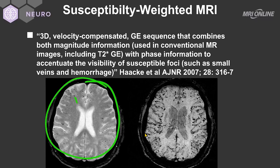On the left side we have a gradient echo scan showing many small black dots of hemorrhage — in this case hemosiderin, because there is no edema around them. On the exact same slice using susceptibility weighted imaging, we see so many more foci of hemosiderin. Although gradient echo technique used to be our best tool for detecting hemorrhage, we have now replaced that with susceptibility weighted imaging, which is far superior. Thank you to Mark Haacke.